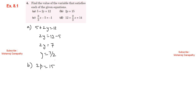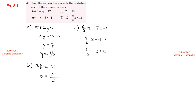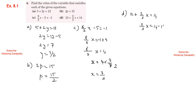Part b: 2p equals 15, so p equals 15 divided by 2. We divide both sides by 2 since 2 is a multiplication factor, giving 15 by 2. Part c: 8 by 3 times x minus 5 equals minus 1. So 8 by 3x equals minus 1 plus 5, which is 4. Then x equals 4 times 3 by 8, giving x equals 3 by 2. Part d: 12 plus 2 by 3x equals 14. So 2 by 3x equals 14 minus 12, giving 2 by 3x equals 2. Then x equals 2 times 3 by 2, and 2 and 2 cancel, so x equals 3.